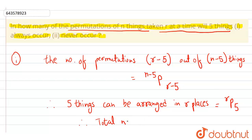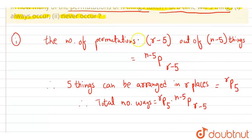Therefore, we can say total number of ways, total number of permutations or total number of ways, will be the product of these two. That means r P 5 into n-5 P r-5. This is the answer of the first part.